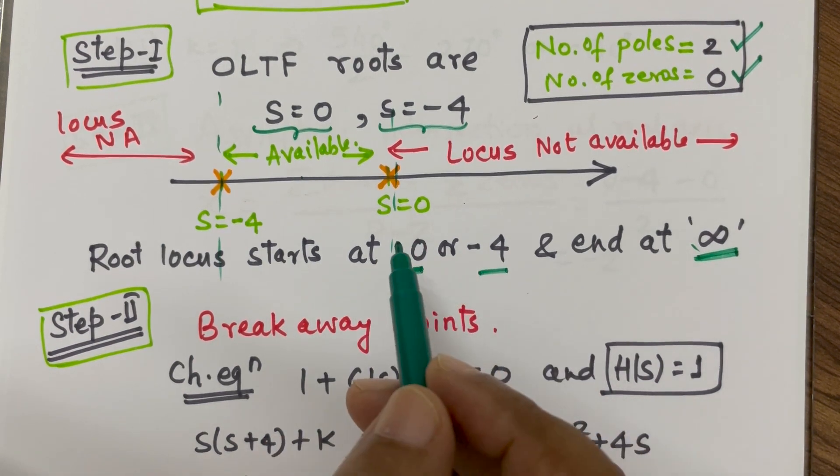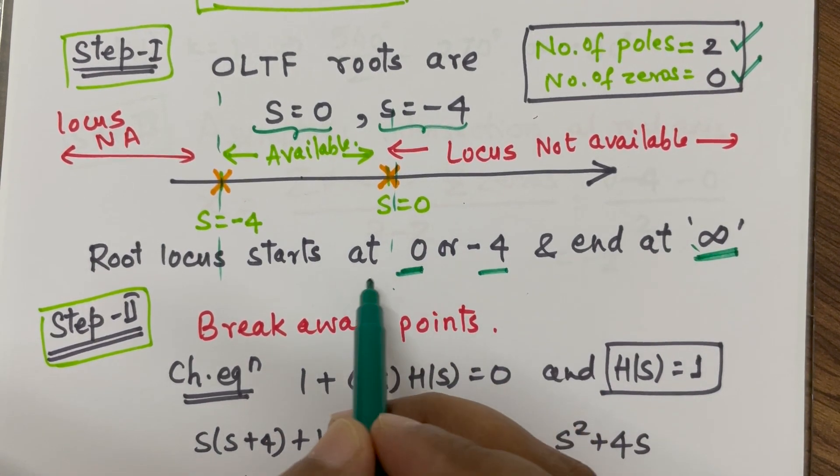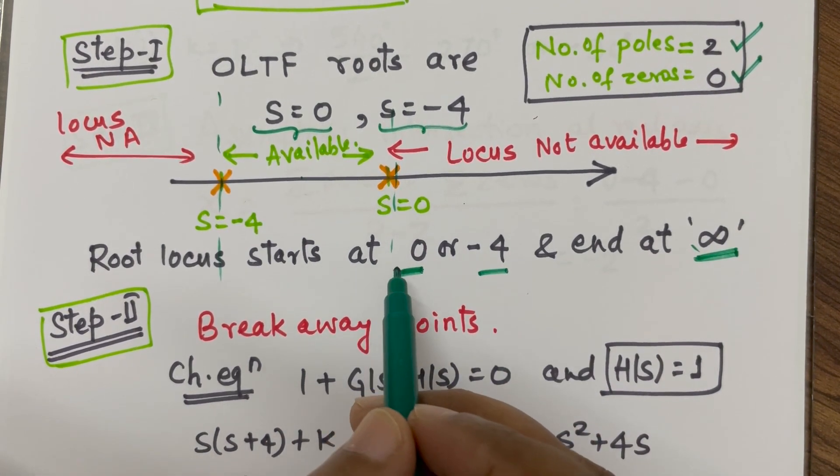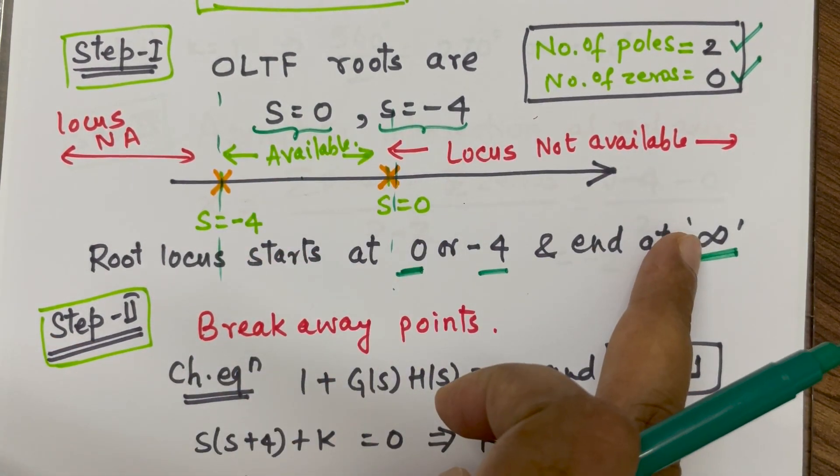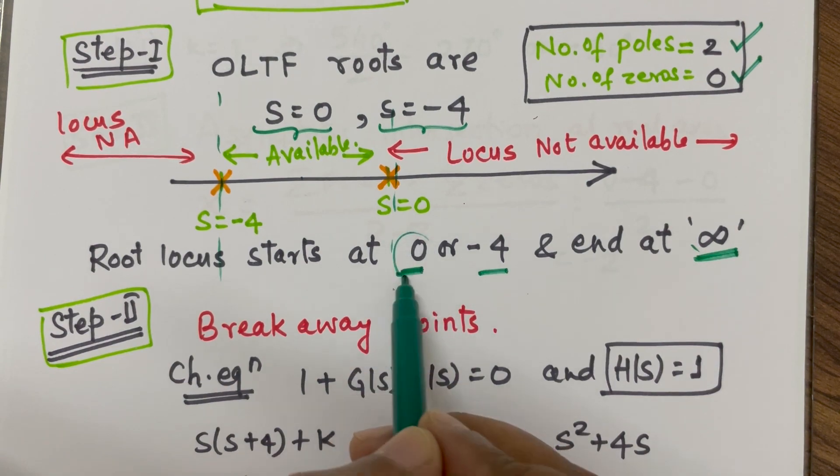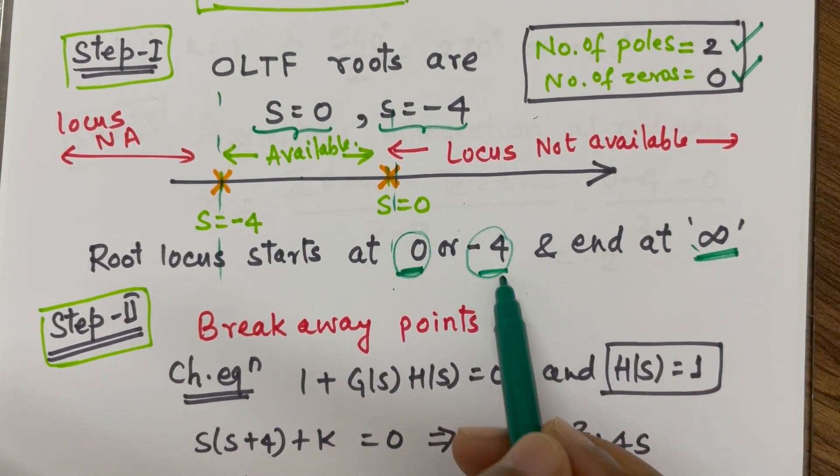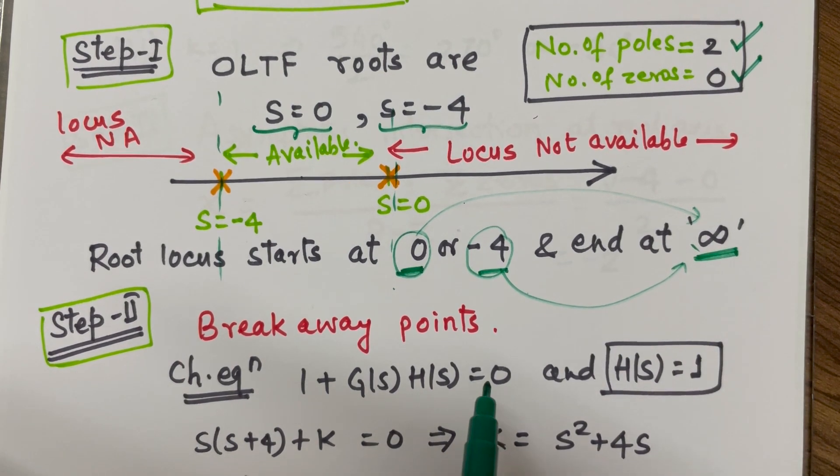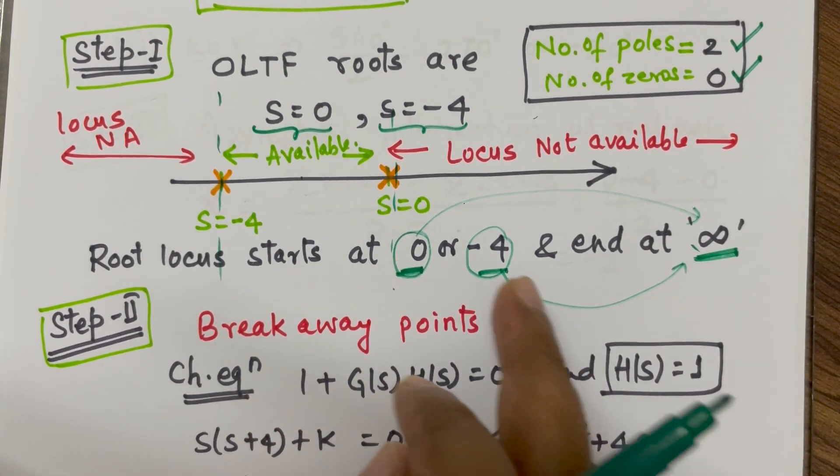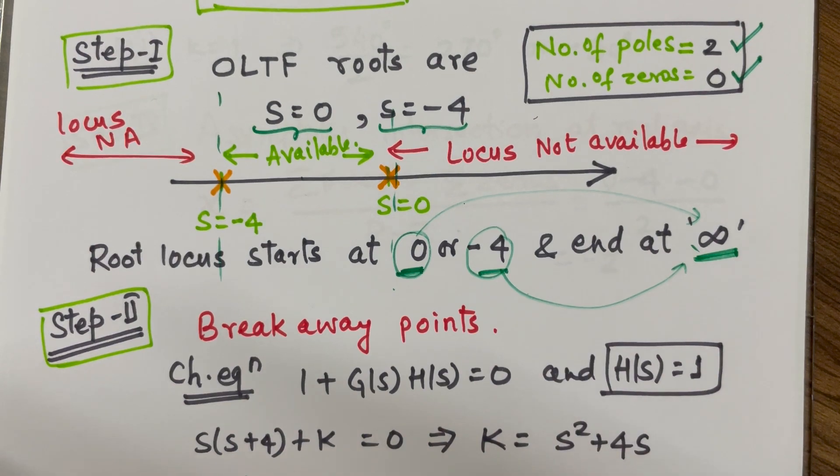Suppose, you have some zeros also, then some of the branches will start from poles and end at 0. So, these are poles. It will start from these poles and go to infinity. But, if there are some zeros available in your question, in that case, some of the branch will end at 0.